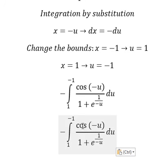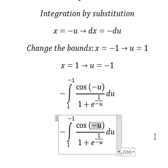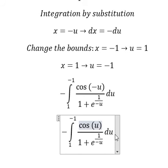So cosine of negative u equals cosine of u, and e to the negative u equals e to the power of u in the denominator.